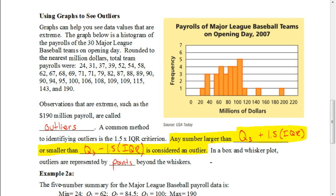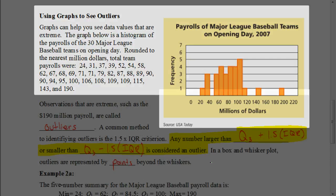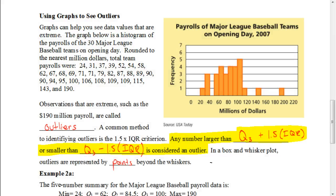Graphs can help you see data values that are extreme. The histogram shown is of the payrolls of the 30 major league baseball teams on opening day, rounded to the nearest million dollars. Total team payrolls are given as a list of numbers, and they've created a histogram for that data.